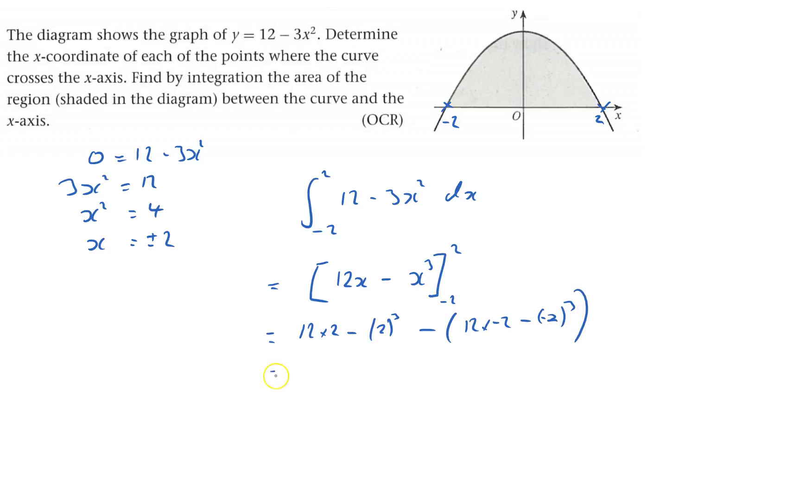And that comes to 24, minus 8, minus, minus 24. And then minus, and negative 2 cubed is negative 8. So minus, minus 8 is minus minus 8, which is plus 8. And then that comes to 32.